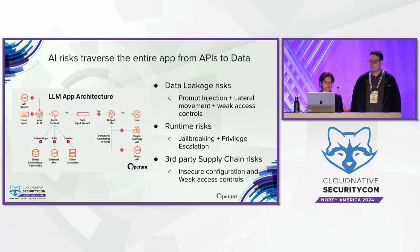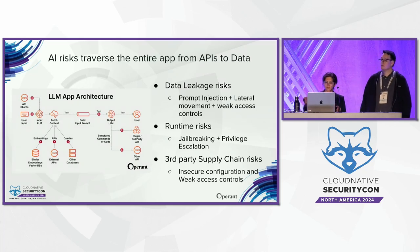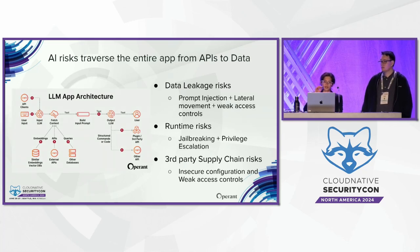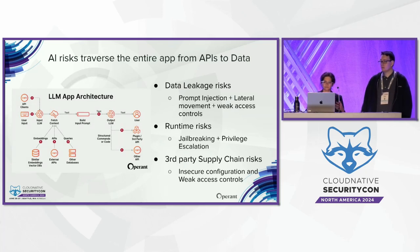What does an end-to-end risk scenario look like for these AI apps? A prompt injection attack could be introduced through the input LLM, causing it to extract additional data from vector databases and pull in data from external APIs it wasn't supposed to access. That sensitive data gets built into the system prompt, which gets processed by the output LLM. Based on its connections with third-party APIs and agents, this could cause a data exfiltration or data leakage attack if PII data is leaked back to a malicious attacker — similar to how failures laterally move through a microservices application.